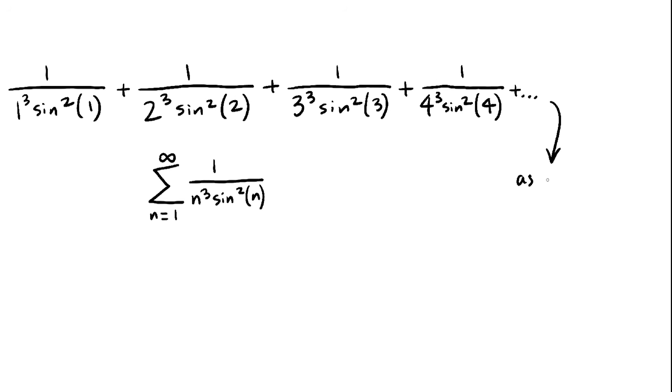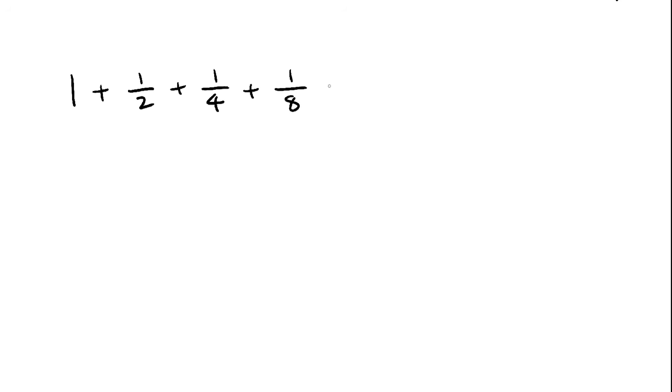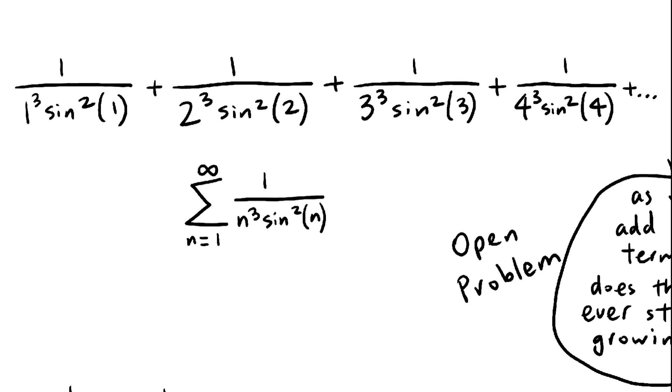The interesting thing about this series is that no one knows whether it diverges, goes to infinity, or not. Usually in math, it's pretty easy to tell whether an infinite sum will converge to a specific value or diverge out to infinity, but this is the exception.